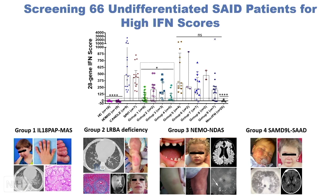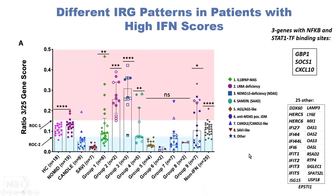In our case, from the same 66 patients, we observed that 36 of 65 with an interferon score had a high interferon response gene signature, and the others had low. The usefulness of the interferon score is illustrated by the finding that some patients had a high interferon score but not as high as monogenic interferonopathies, and we ended up finding they had other diseases such as NEMO or inflammatory disease.